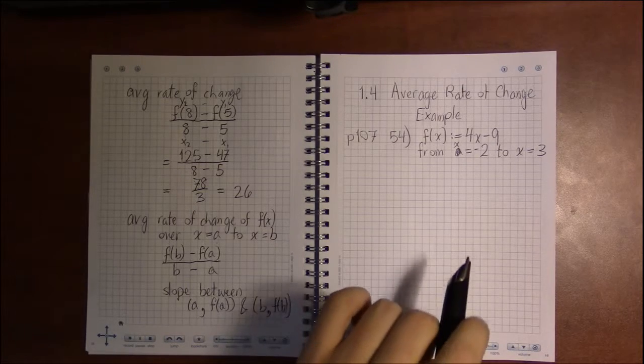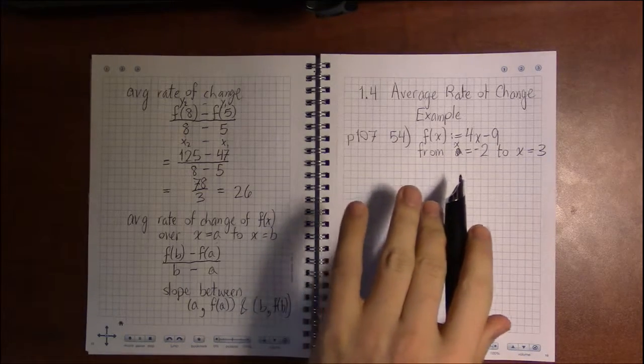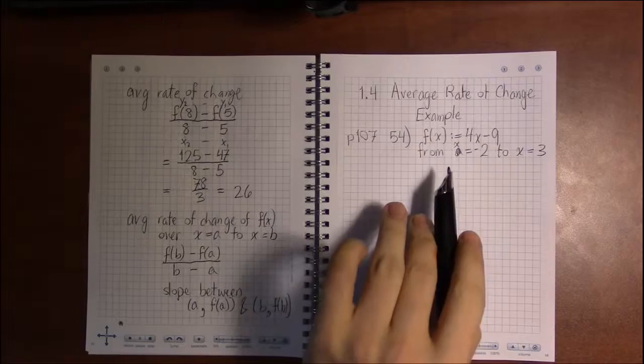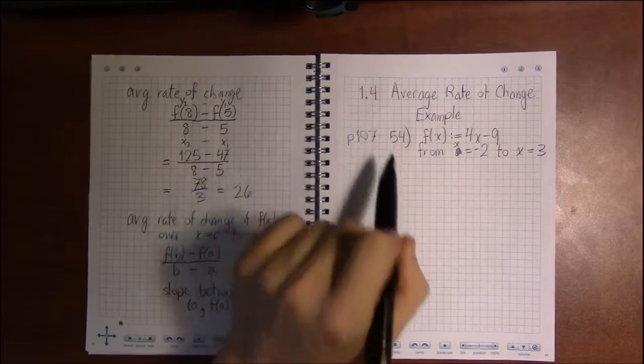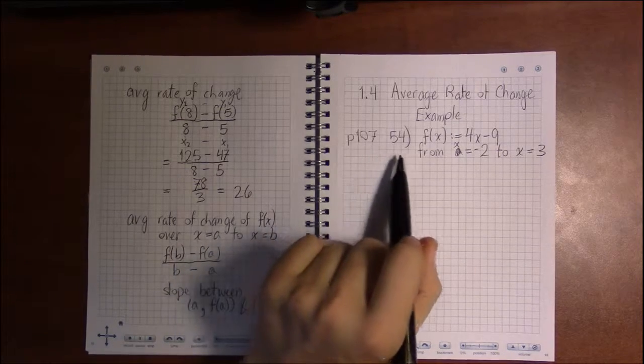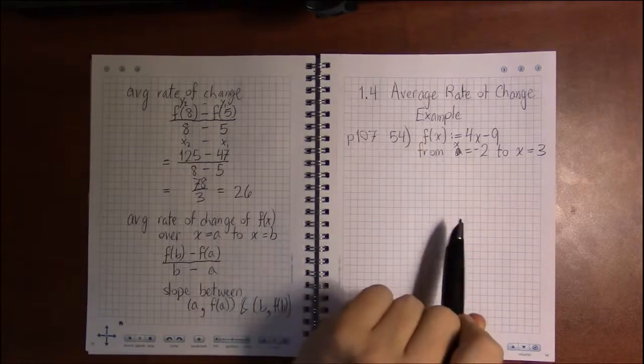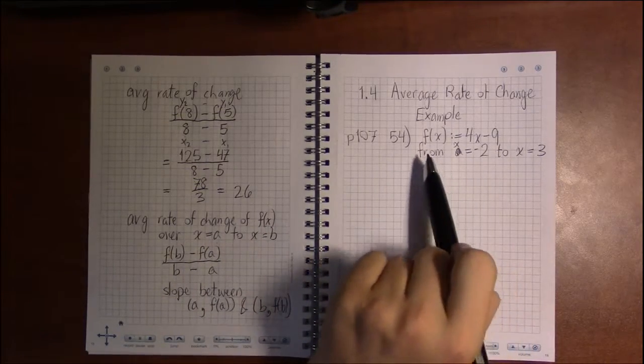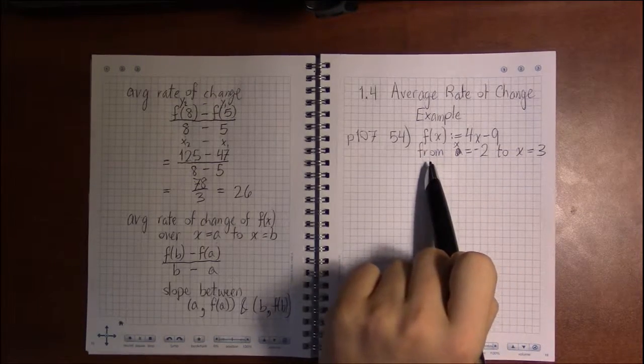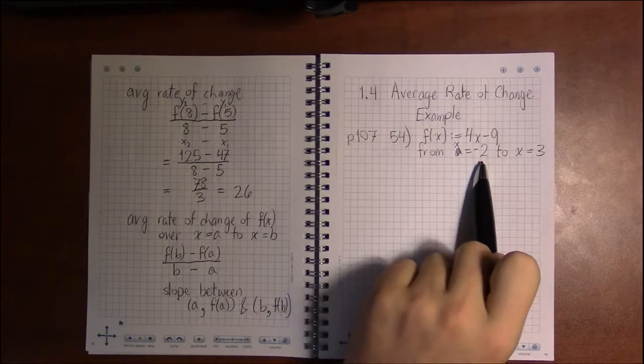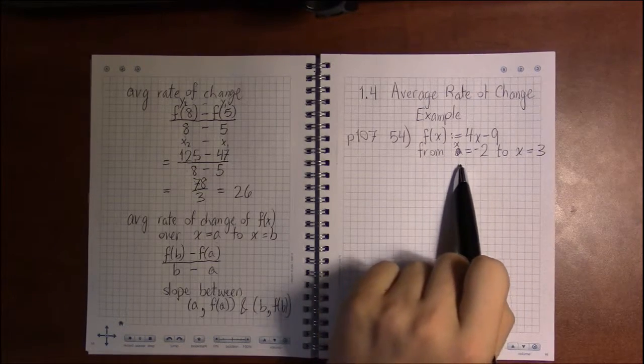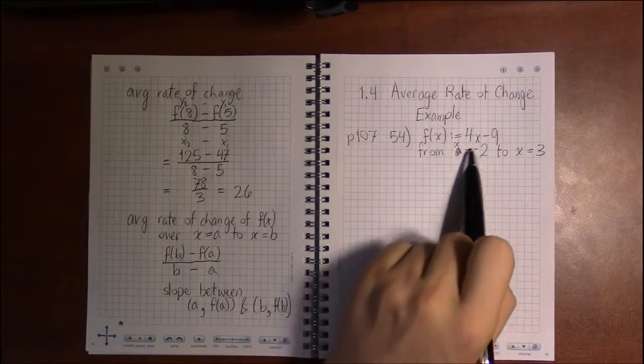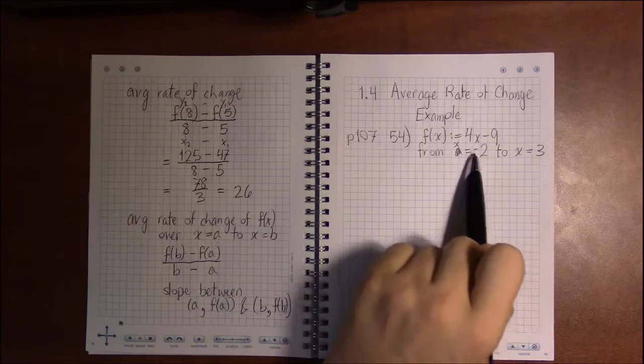All right, let's take a look at some examples of average rate of change. In section 1.4 on page 107, we're looking at homework problem number 54. Now, the way they state the problem, they say from A = -2 to B = 3. That's just a common way of saying the small x value...